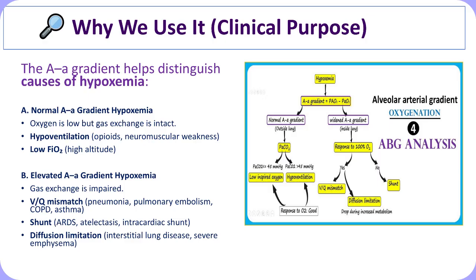An elevated gradient signifies impaired oxygen diffusion or disrupted ventilation-perfusion balance, commonly seen in conditions such as pneumonia, acute respiratory distress syndrome, pulmonary embolism, chronic obstructive pulmonary disease, atelectasis, intracardiac right-to-left shunting, or interstitial lung disease, where structural or functional abnormalities hinder oxygen equilibration between alveolar gas and arterial blood.